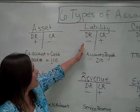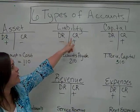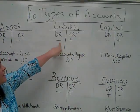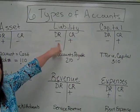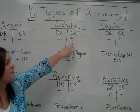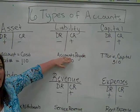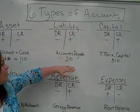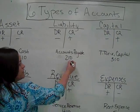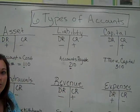Moving on to the liability account: debit is on the left, credit is on the right. The rules for liability are debits are minuses and credits are pluses. An example account would be accounts payable, and an example account number would be 210, because liabilities all start with a two.